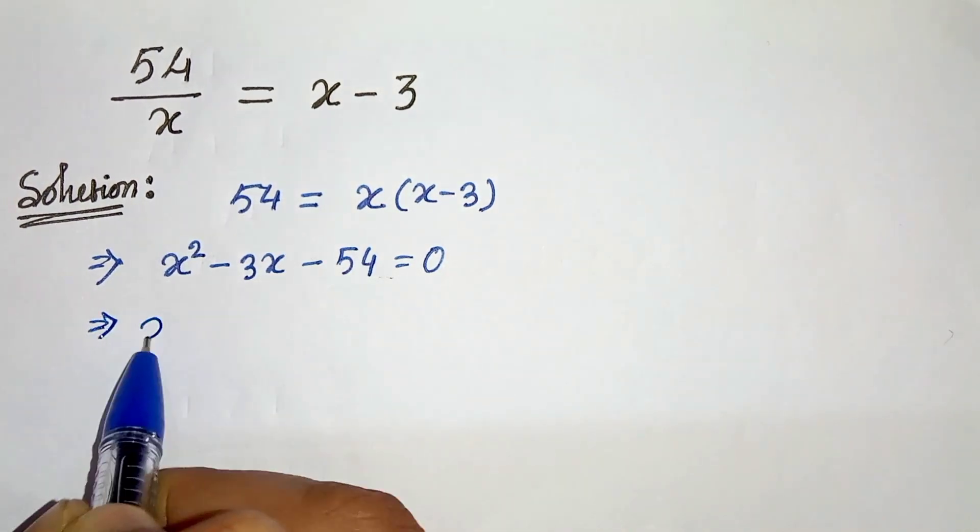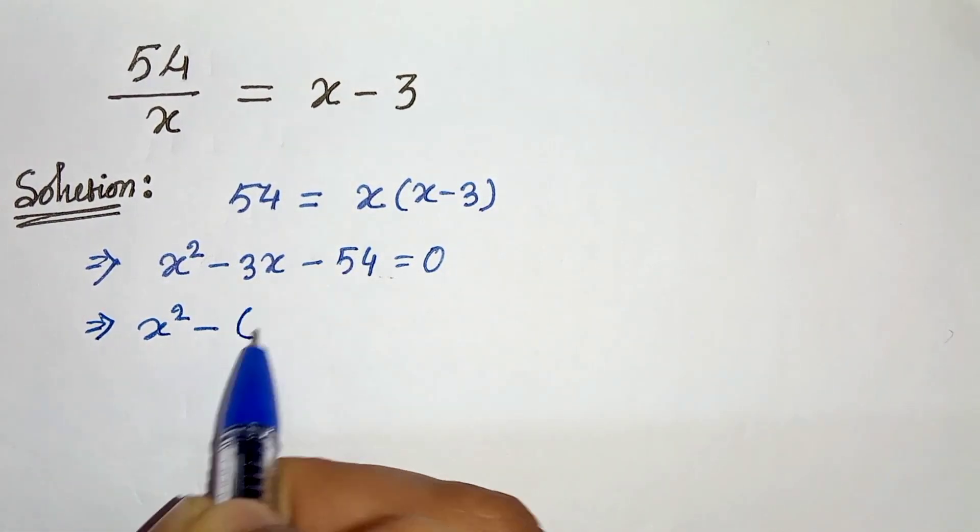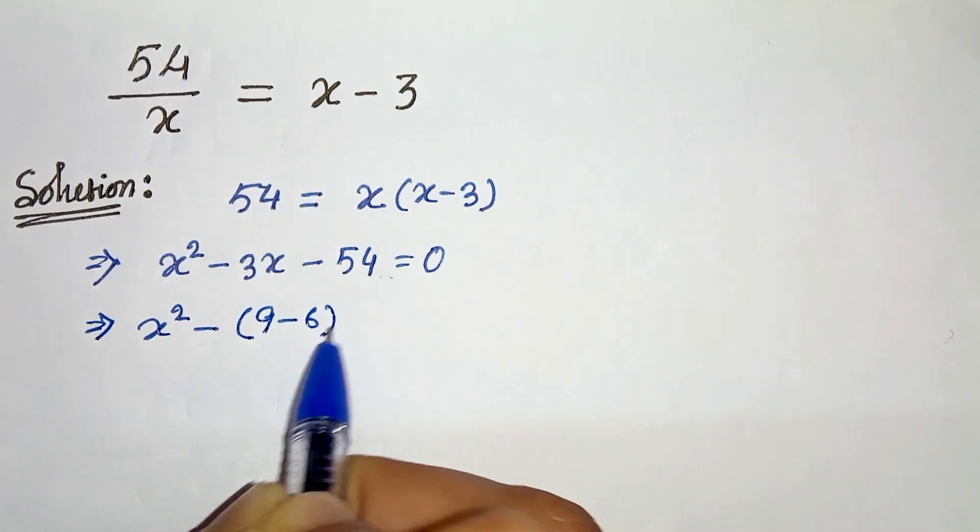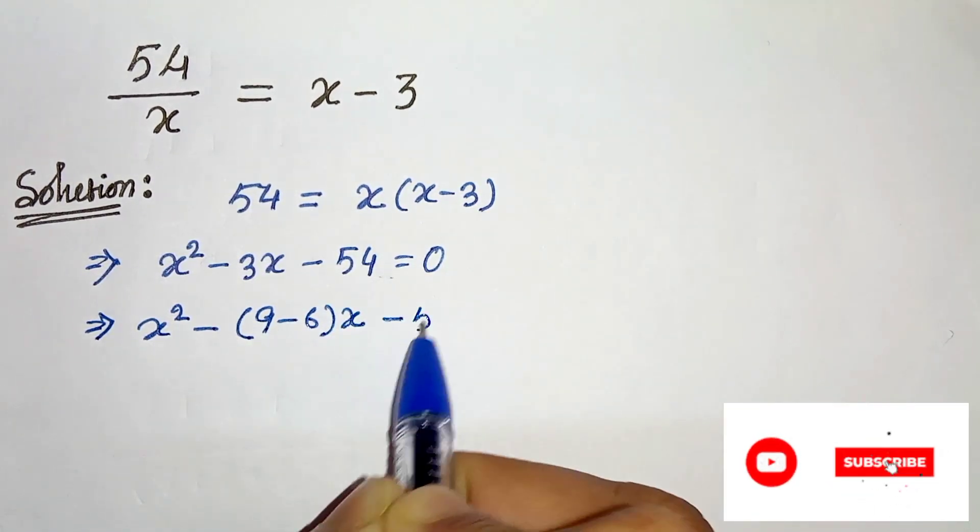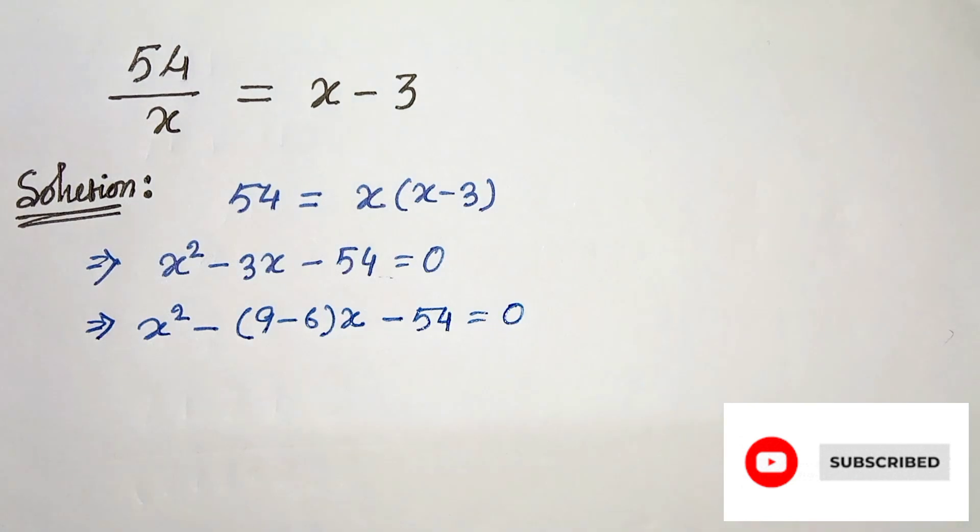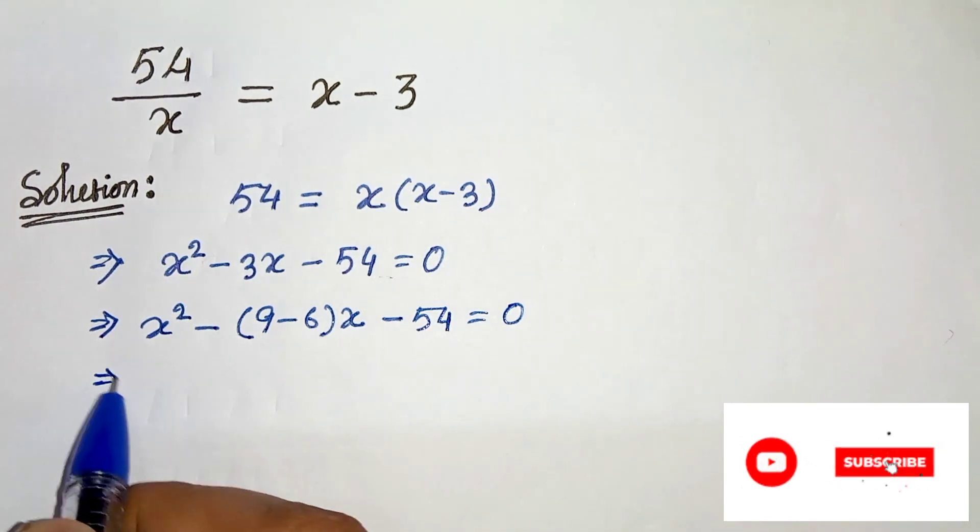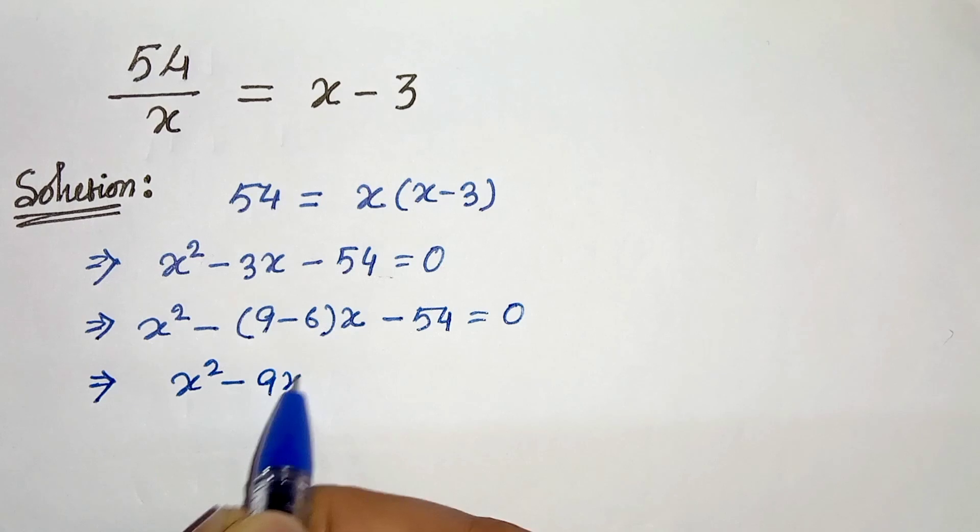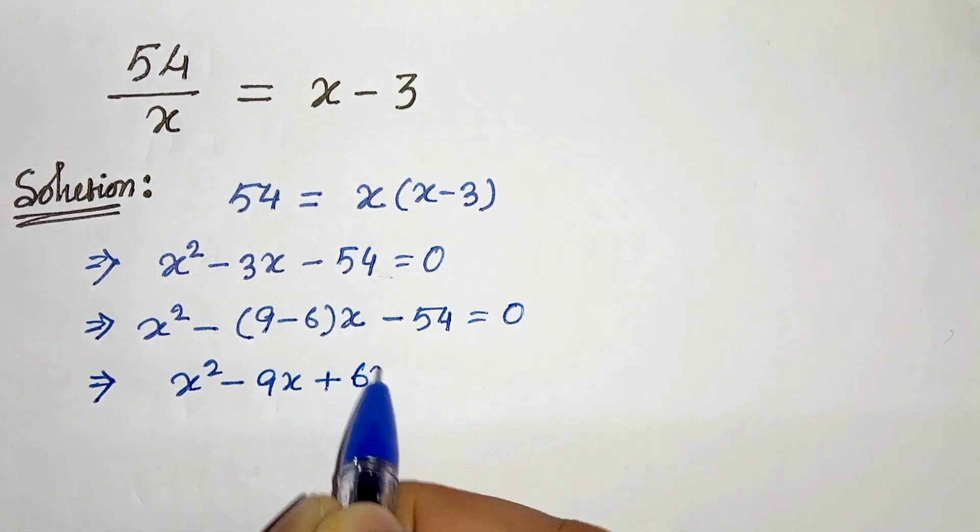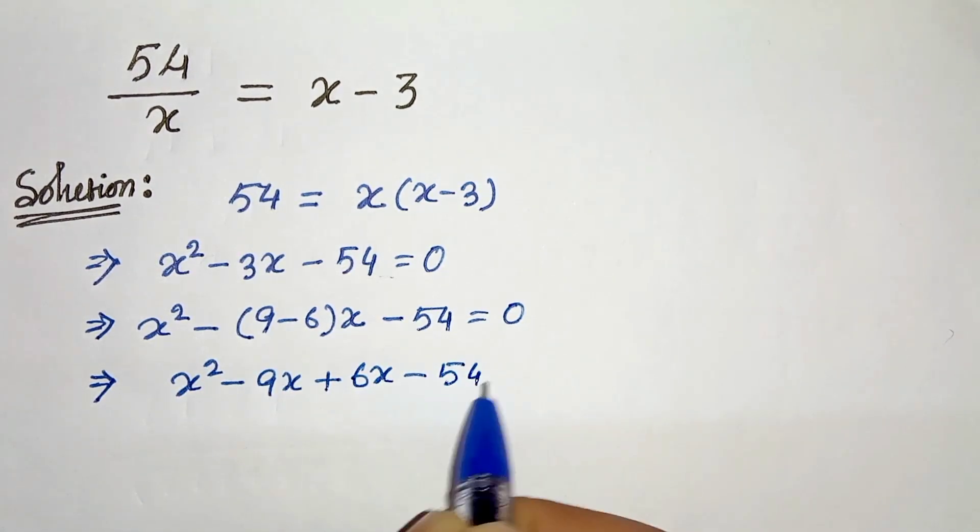So let us write x squared, splitting the middle term as minus 9x plus 6x, so x squared minus 9x plus 6x minus 54 equals 0.